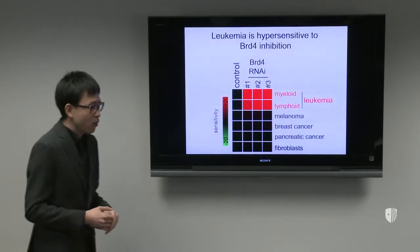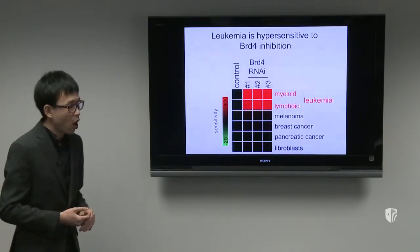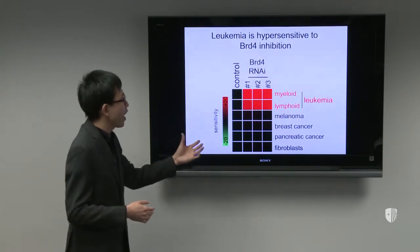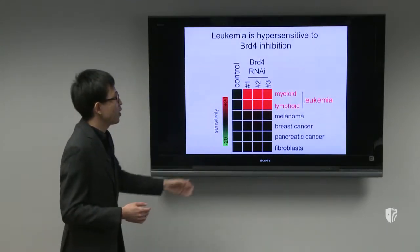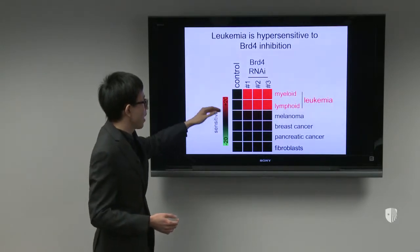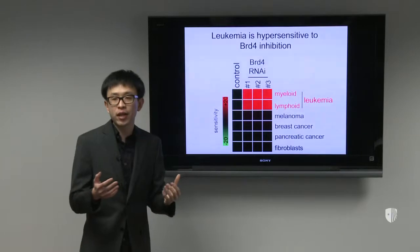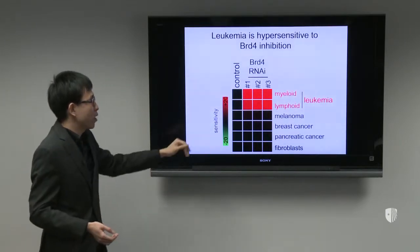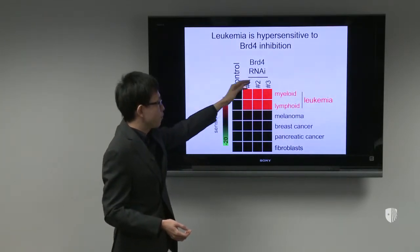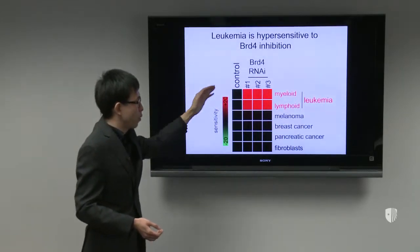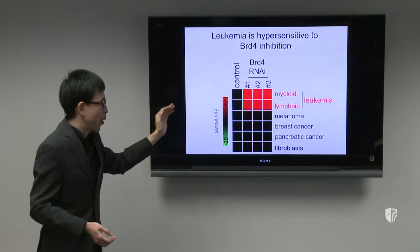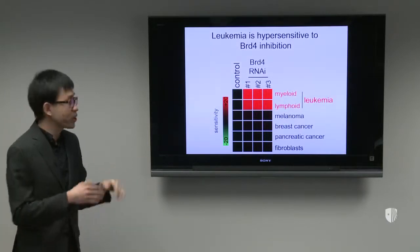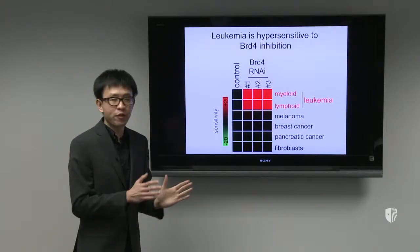We considered whether this is a leukemia-specific target or whether we're hitting normal cells more generally. We used BRD4 RNAi across several cell lines — the heat map shows that in red indicates sensitivity to BRD4 inhibition. It looks like only leukemia is sensitive to BRD4 inhibition compared to melanoma, breast cancer, pancreatic cancer, and fibroblasts, showing specificity.